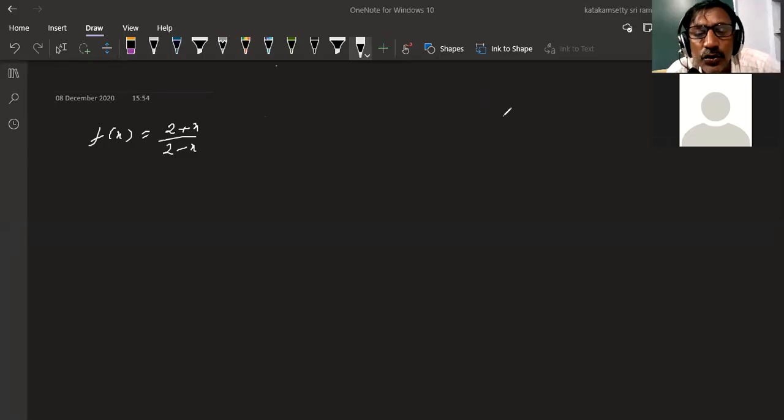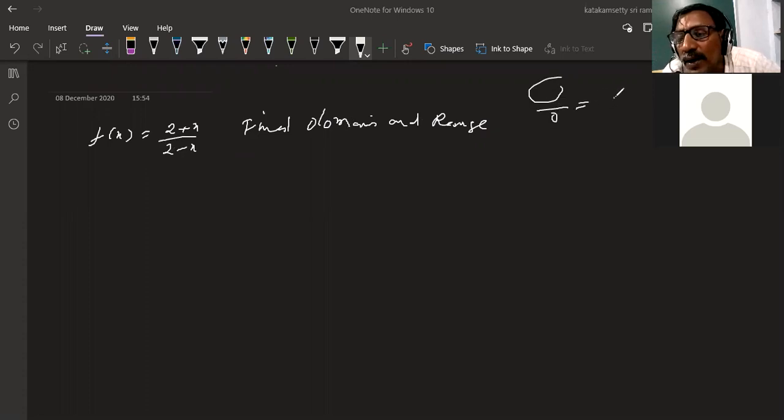f of x equals 2x plus 1 over 2 minus x. Find domain and range. You can tell that the denominator will never be zero. If the denominator is zero, it will be indeterminate.